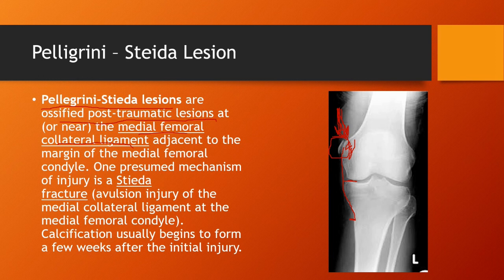So this has been a chiropractic orthopedic review of knee injuries and knee instability syndromes focused on the medial collateral ligament. In our next discussion, we'll go around to the other side of the knee and talk about the lateral collateral ligament. For now, this is Dr. Perry Carpenter wishing you the best of success.